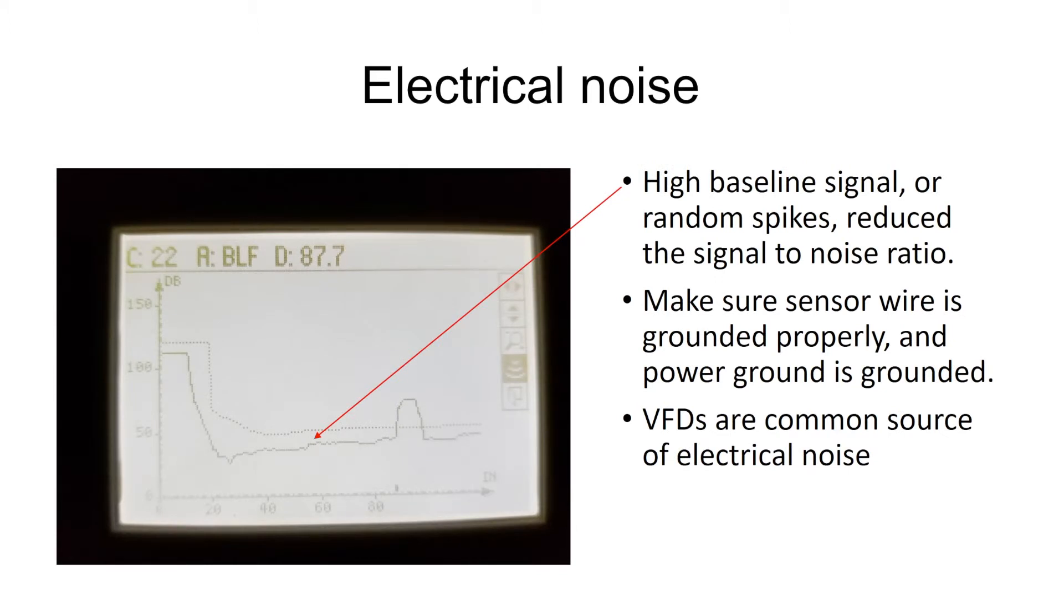Electrical noise can cause us a lot of problems also, especially if the signal wire we have coming from the sensor back to the level control is not grounded or not grounded properly. The two conductors in the shield that come from the sensor back into level control, I want to make sure that that shield is tied to the shield connection and also, I want to make sure that the power ground is tied to a good earth ground. What we're seeing a lot now is VFDs are just creating a tremendous amount of ambient electrical noise that can be picked up by the sensor.